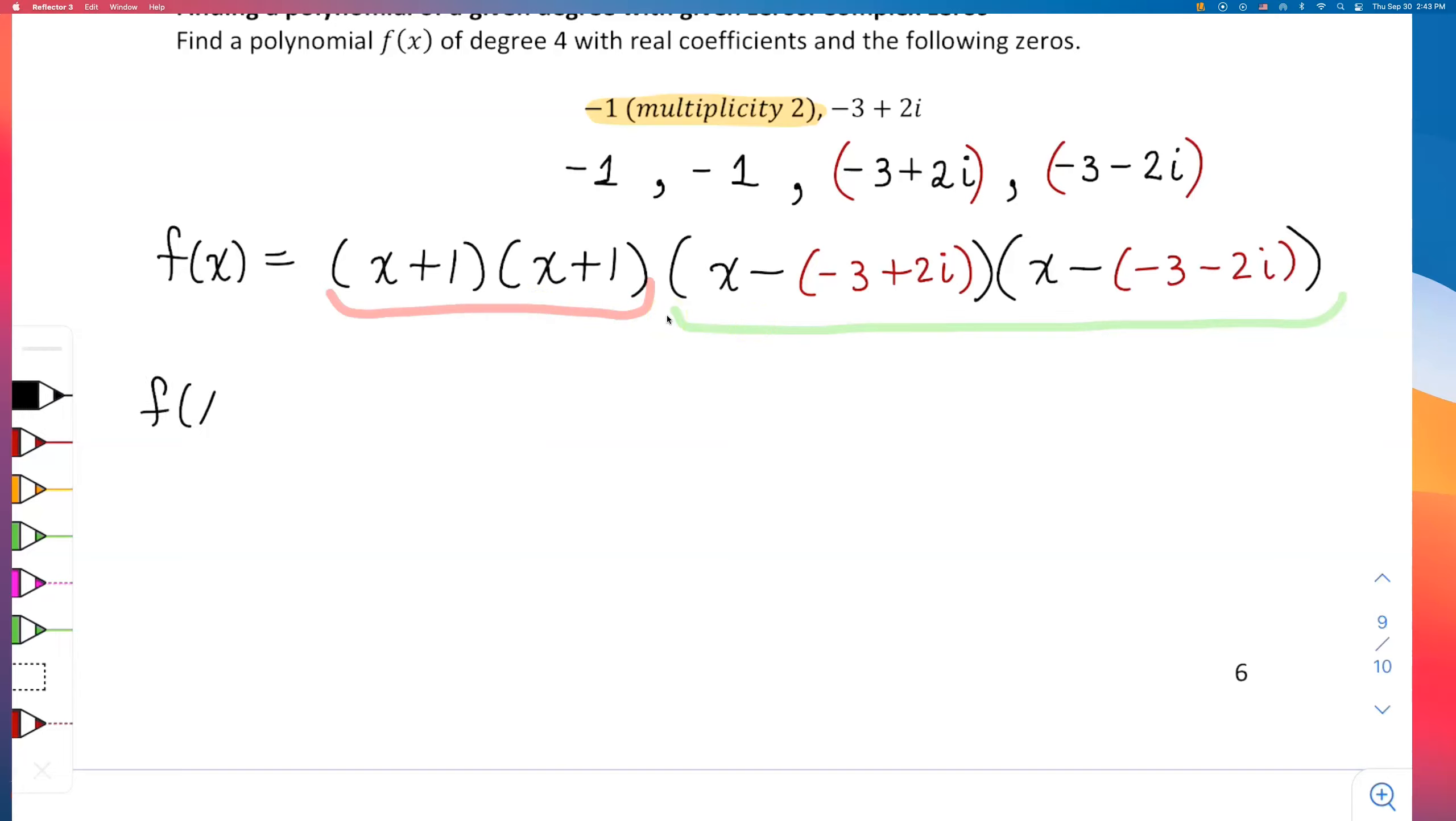I'll start with one in red. If I multiply that, I will get, or FOIL this, I will get x² + 1x + another 1x. Lastly, if I do 1 times 1, that is +1.